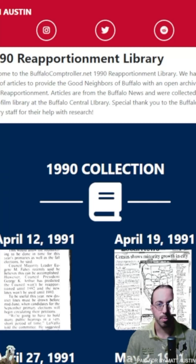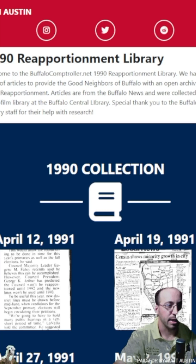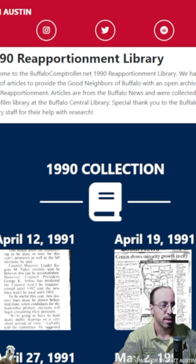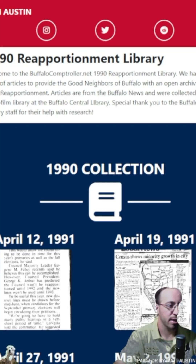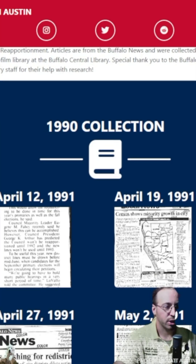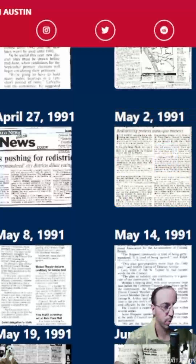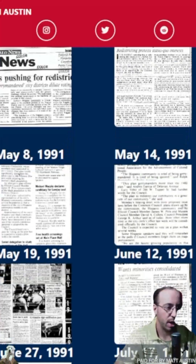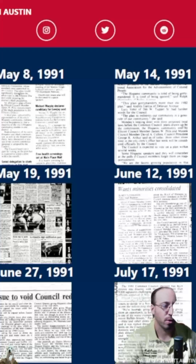Hello good neighbors, it's Matt. I just wanted to give everybody a tour of the 1990 reapportionment library that I developed on my website. If you go to buffalocontroller.net/1990, I built a collection of articles that I've accumulated through doing research at the Erie County Public Library with the microfilms.